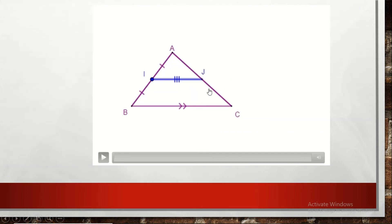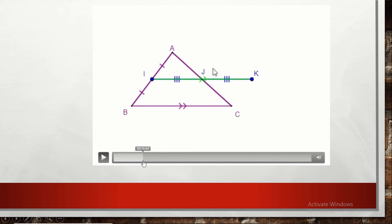Let's prove the converse of midpoint theorem together. By the same method, we construct the symmetric of I with respect to J. Since IJ is given parallel to BC, IJ and K are collinear by symmetry, so IK is parallel to BC. Also, J is the midpoint of IK by symmetry, so IJ equals half IK. Therefore IK and BC are equal and also parallel to each other.